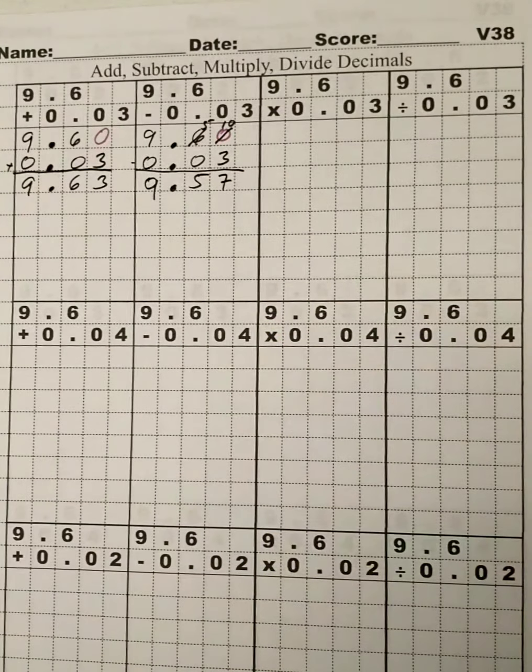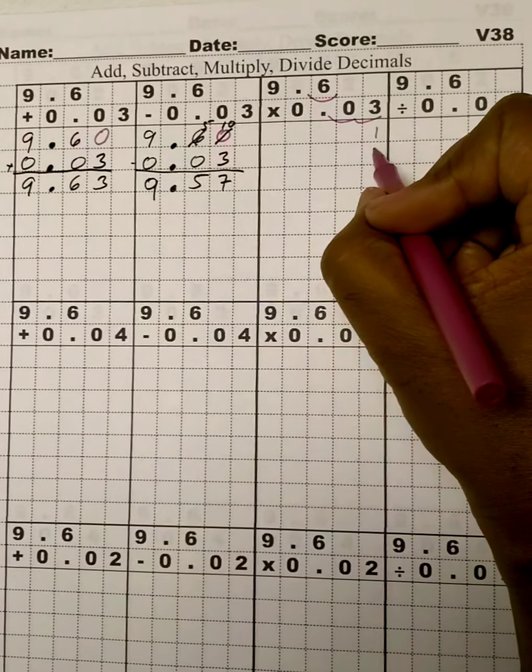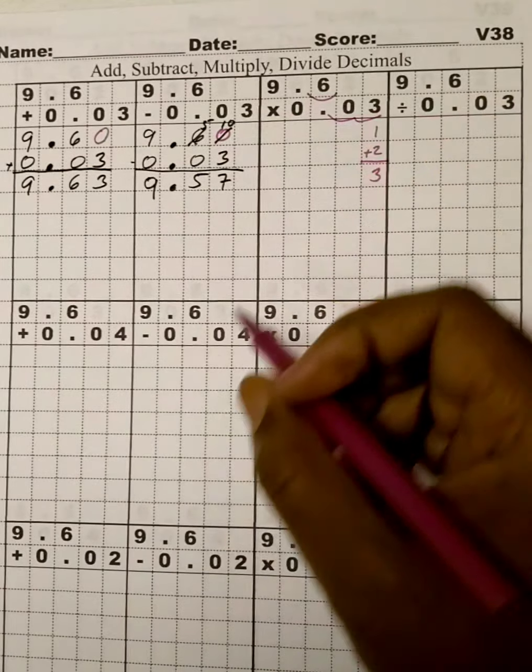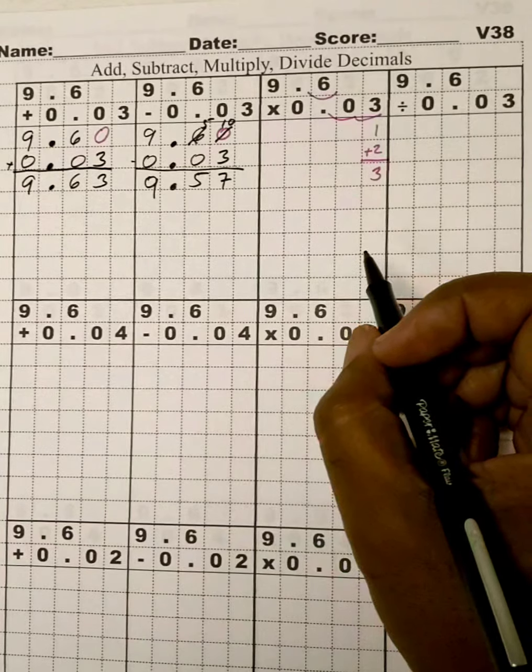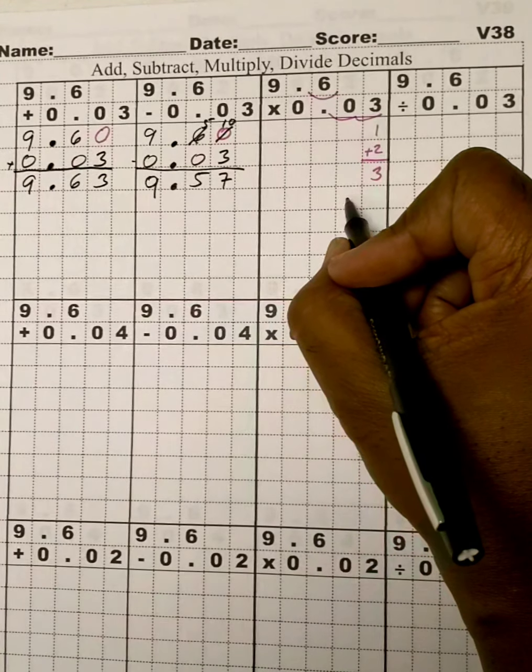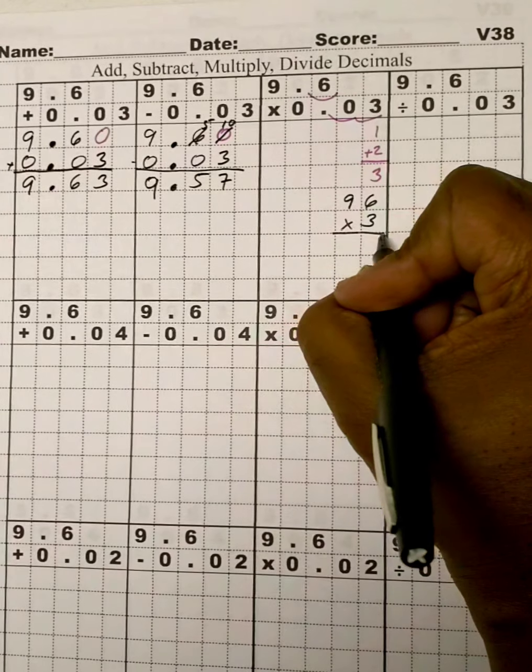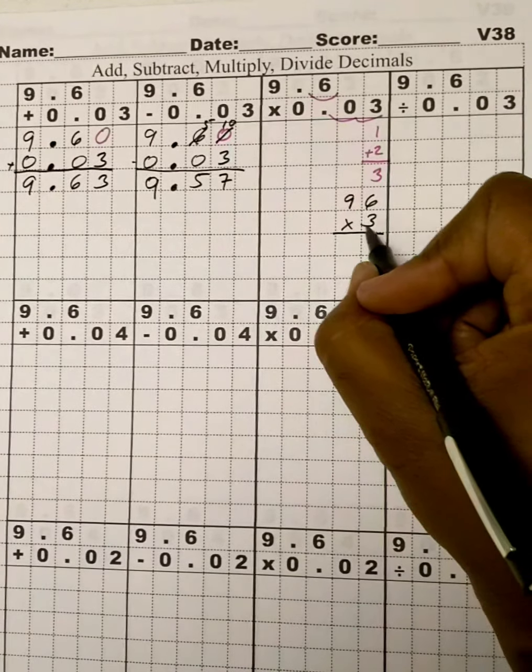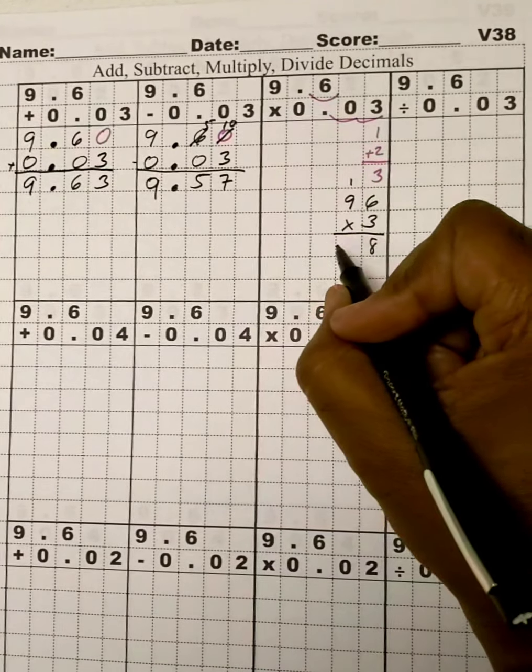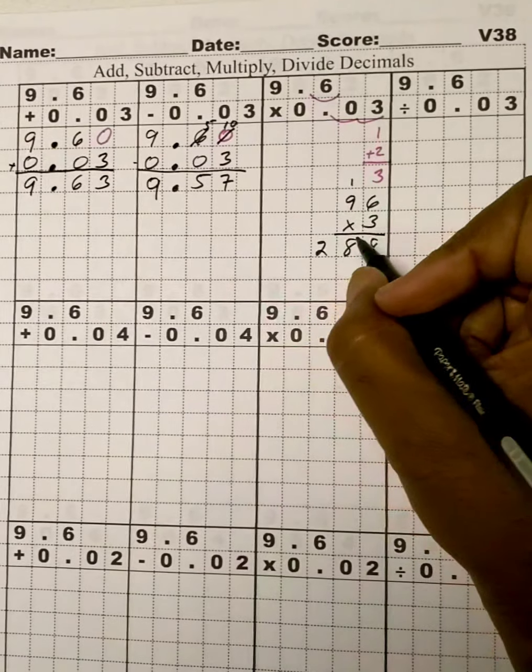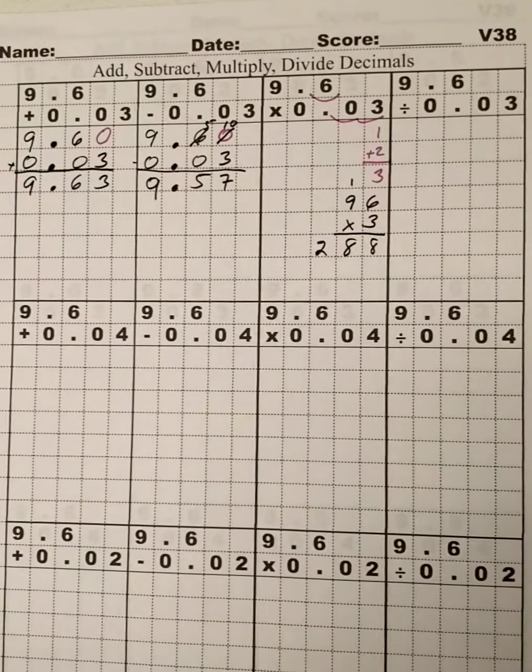Now, for multiplication, we have one place here and two places here. So, we add those places together. So, our answer will require 3 places. So, removing all the decimals, we have 96 times 3. I'm going to put it over here. 96 times 3. 3 times 6 is 18. 3 times 9 is 27. Plus one more is 28. Okay. Now, we need 3 decimal places here.